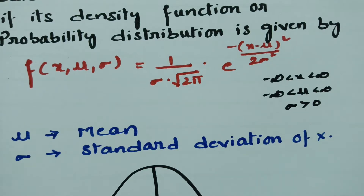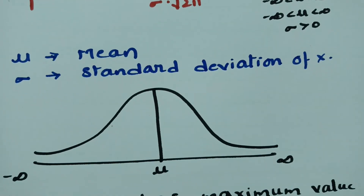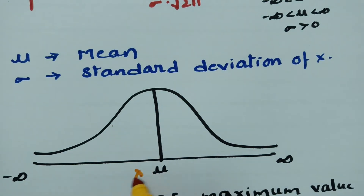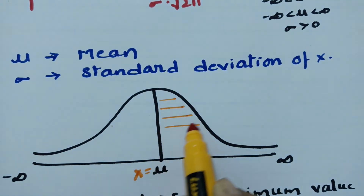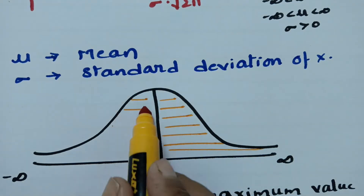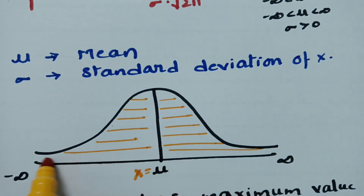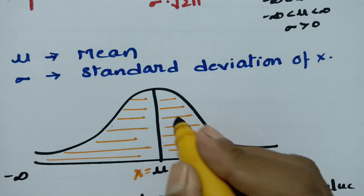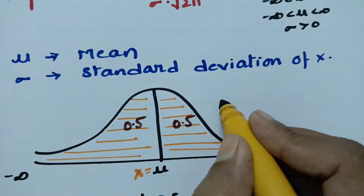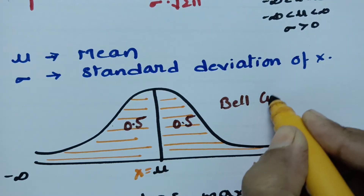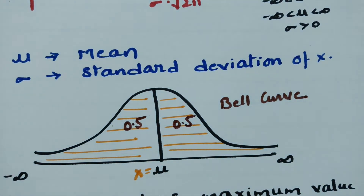The curve related to the normal distribution has a maximum value at x = μ, which is the mean value. If you split the curve, each half has an area of 0.5 and 0.5. Because of its bell shape, this curve is called a bell curve.